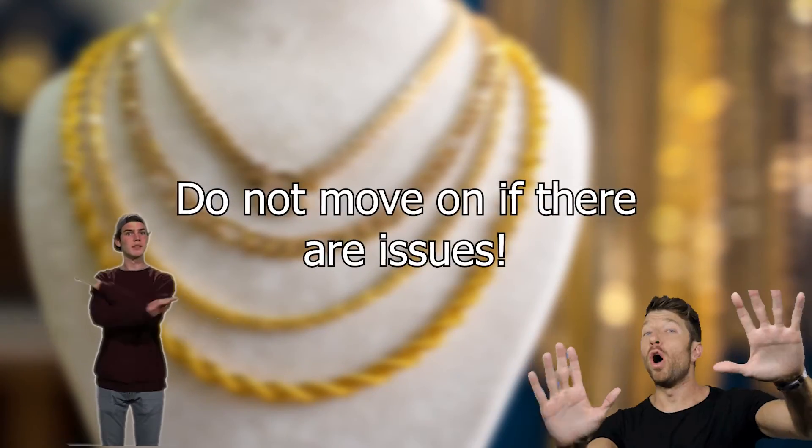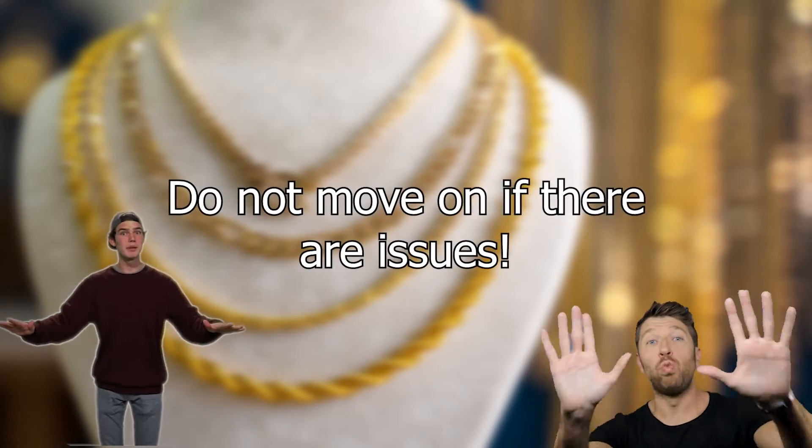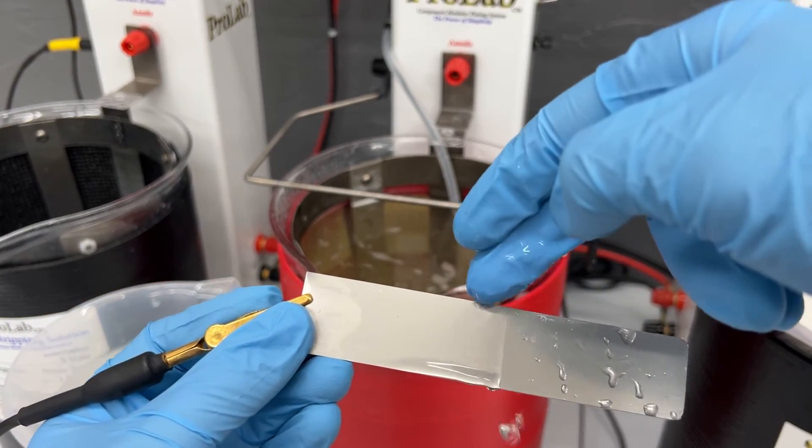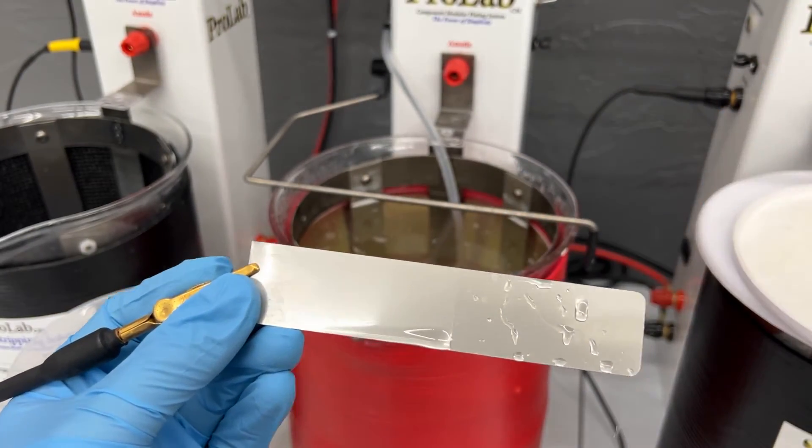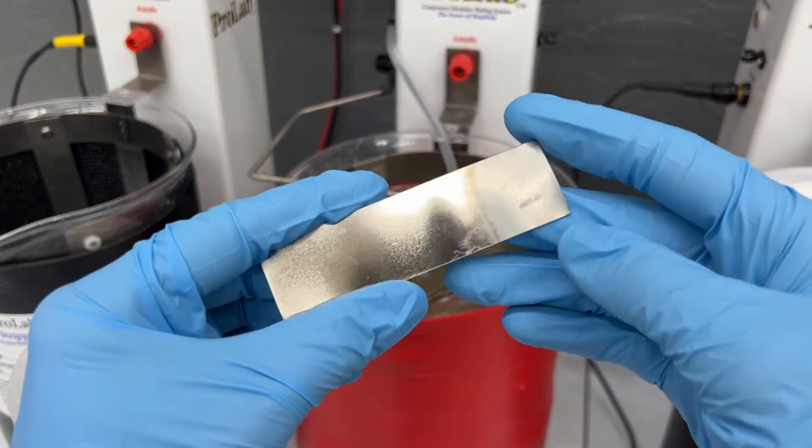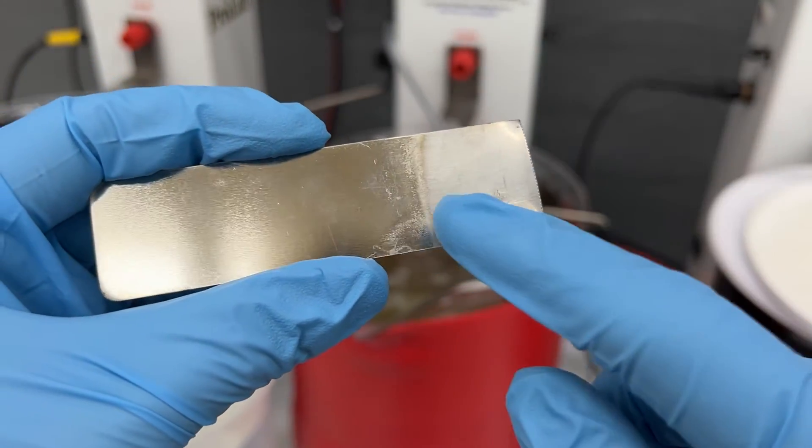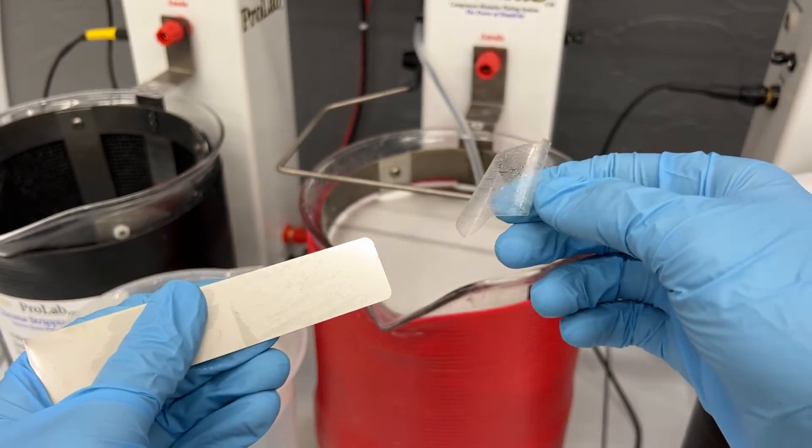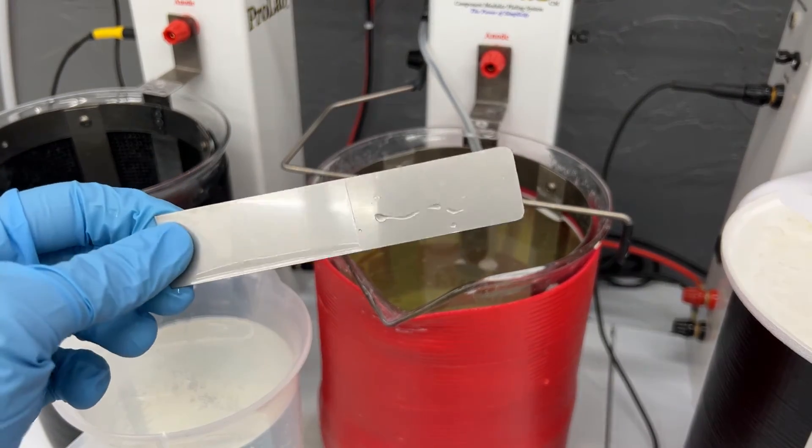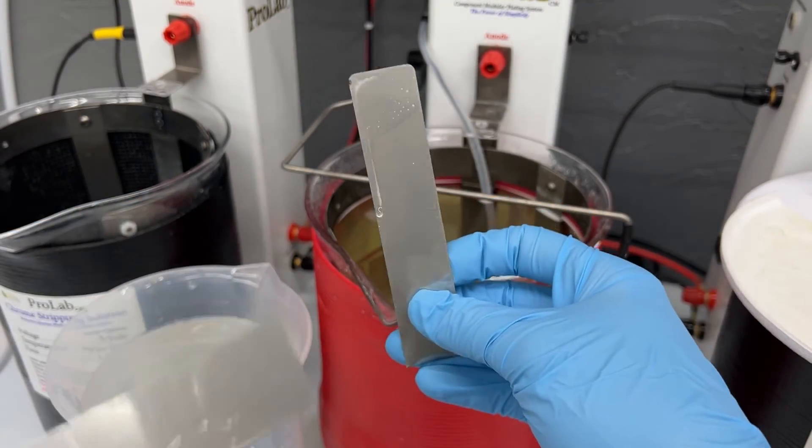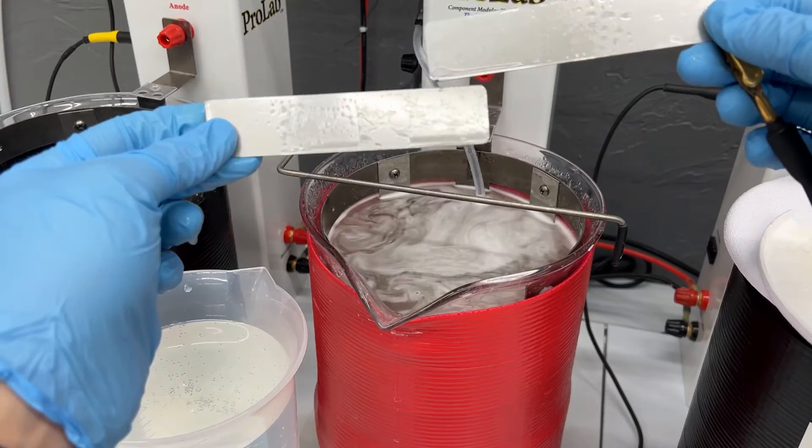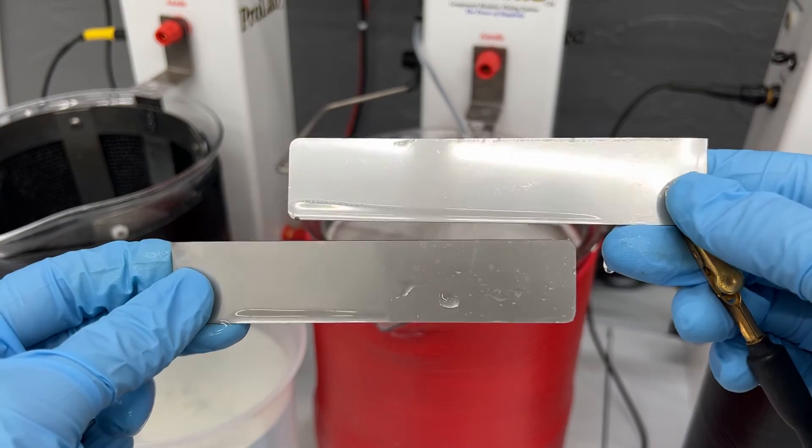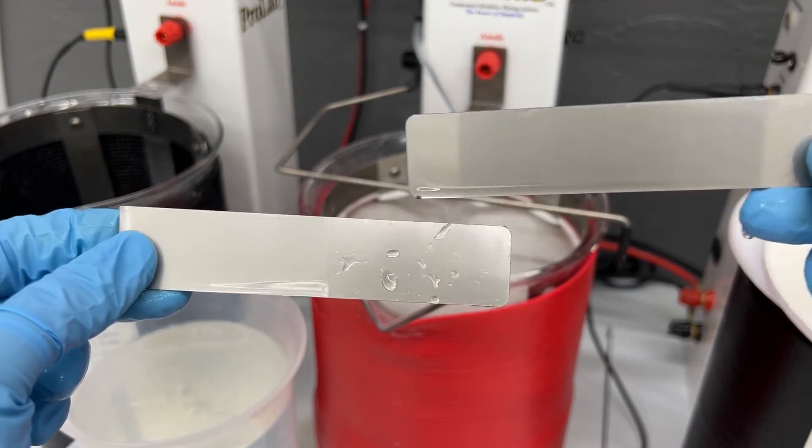Do not move on if there are issues. We cannot stress this enough. If you have an item that is not wetting out or that is showing water stains or lines or any other issue do not move on. Moving on will make the problem harder or more time consuming to correct. If you notice a problem stop and troubleshoot it until you resolve it. If you're having a difficult time figuring out an issue try plating onto a separate piece. This will help you determine whether or not the issue is being caused by your process, an old contaminated solution or if the problem is the surface that you are plating onto.